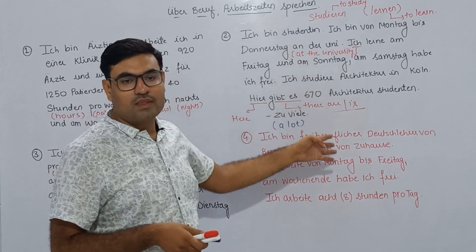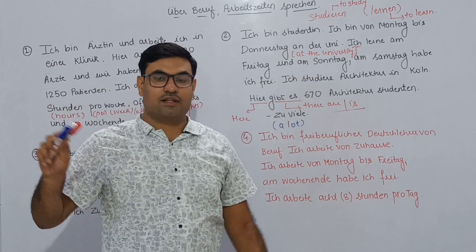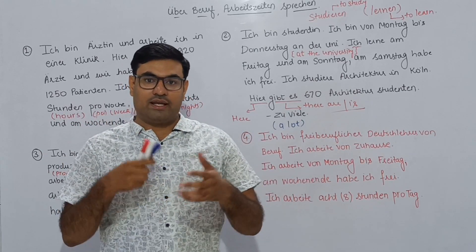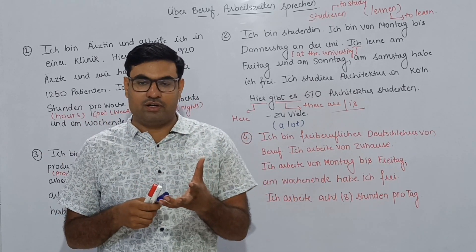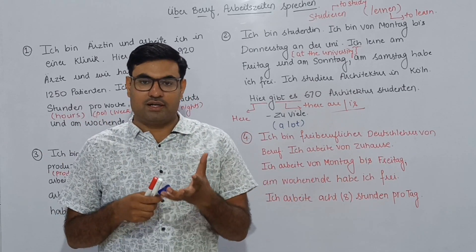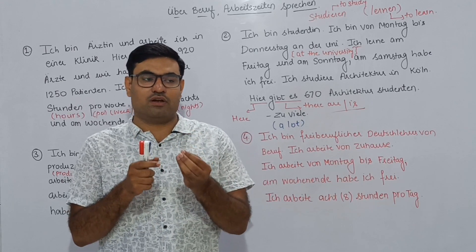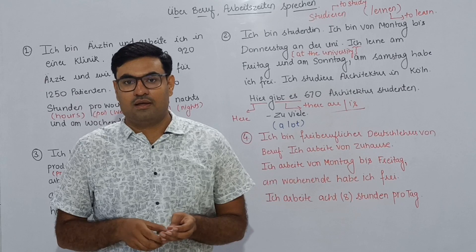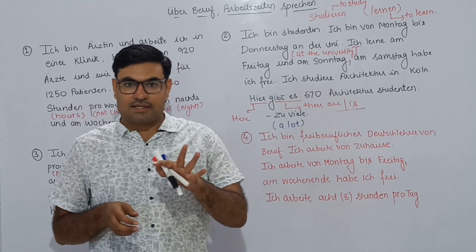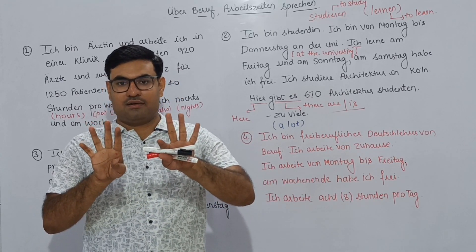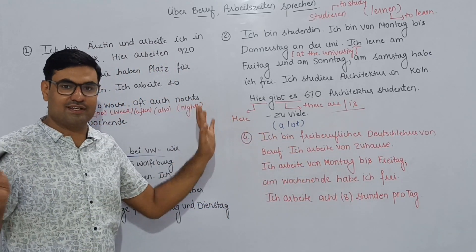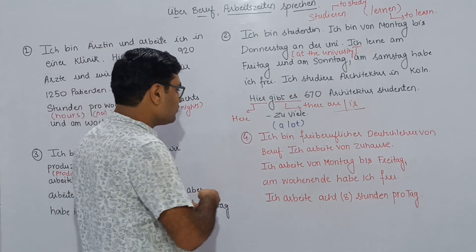So these are three texts we have learned. Each text is written about a person explaining what they do. There are three texts on the board. Now what you should do is: if you are a serious German learner and want to practice this, you can write a complete paragraph about yourself. For now I know that you don't know much vocabulary, but taking help of these vocabularies you can frame your own sentences and write it down.